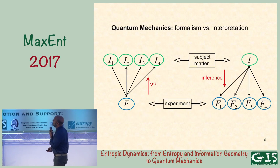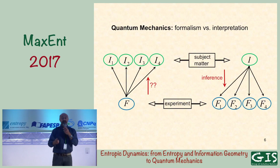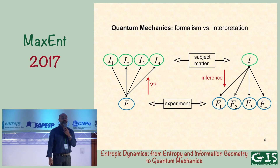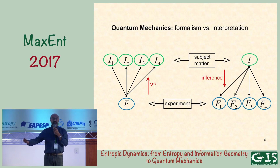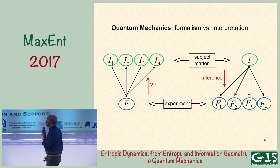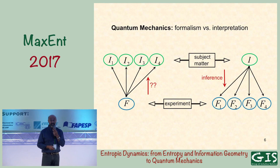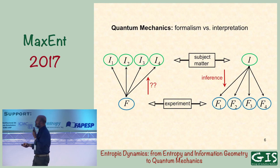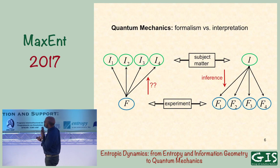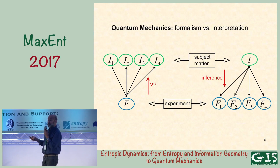In quantum mechanics, even those of you who don't know anything about it know that there is a serious problem about interpretation. Are we talking about particles? Are we talking about fields? Are we talking about many worlds? Is the cat dead or is it alive? These are the serious problems of quantum mechanics, and it has to do with the issue of how you interpret the mathematics. Someone came up with Schrödinger's equation — what does it mean? Once you have the formalism, you try by some process of divine inspiration to come up with interpretations: Copenhagen, many worlds, the Bohmian interpretation, and so on.